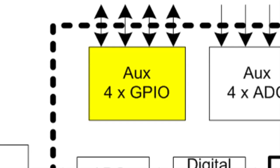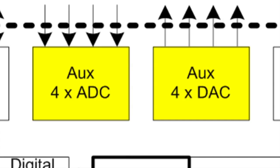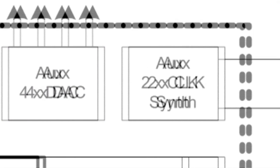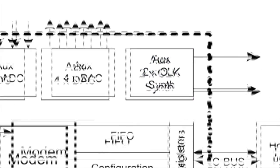GPIO lines are available to precisely control timing of radio functions. ADCs and DACs are available to monitor and control external circuits, and clock outputs provide timing signals to peripheral devices.